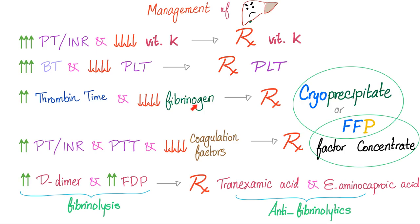We give fibrinogen as cryoprecipitate, or fresh frozen plasma if cryoprecipitate is unavailable. Cryoprecipitate is essentially fibrinogen; fresh frozen plasma contains everything. If PT-INR and PTT are both prolonged and coagulation factors are non-existent, give the specific coagulation factors or fresh frozen plasma. If D-dimer and fibrin degradation products are high — indicating excessive fibrinolysis — give antifibrinolytic therapy: tranexamic acid and epsilon-aminocaproic acid.